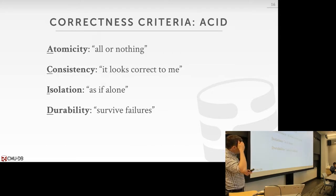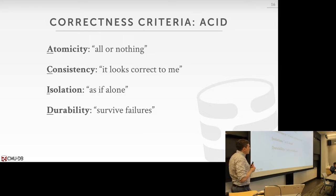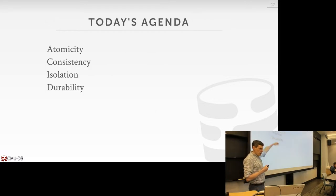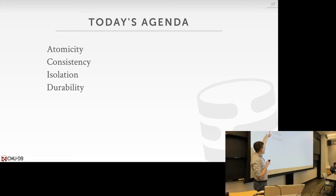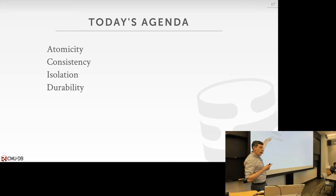A shorthand: Atomicity = all or nothing. Consistency = looks correct. Isolation = running as if alone. Durability = survive all failures. Today we'll go through each one. We'll mostly focus on atomicity and isolation. Consistency doesn't make much sense for a single-node system — it matters more for distributed systems. For durability, we'll spend two full lectures on checkpoints and logging after I come back.